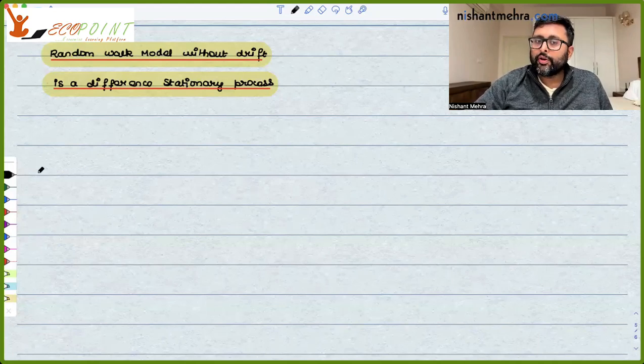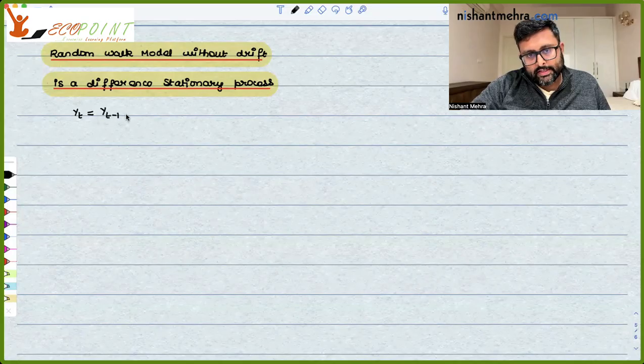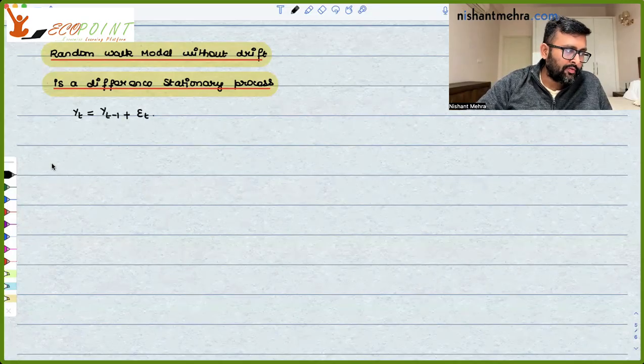Random walk model without drift is a difference stationary process. Now what do you mean by this? Suppose I have a model yt equals yt minus 1 plus epsilon t. So it is a random walk model without drift.